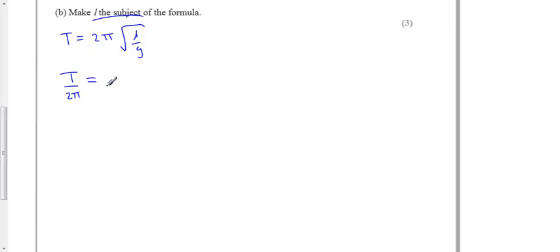T over 2pi is equal to the square root of L over g. Opposite of square root is squared, so we get T over 2pi all squared is equal to L over g.